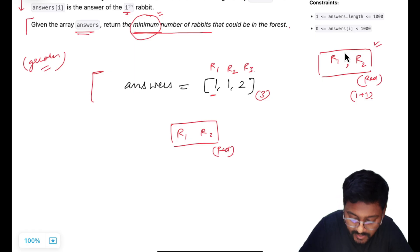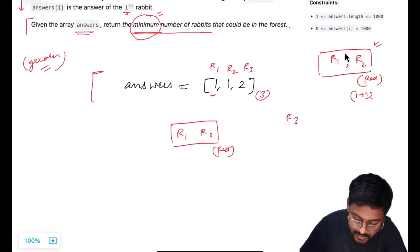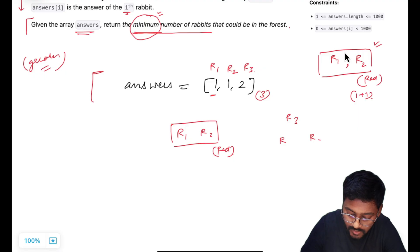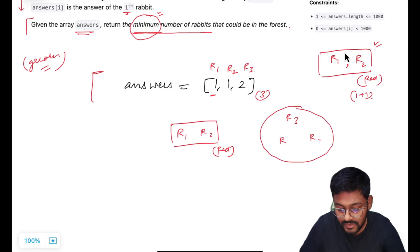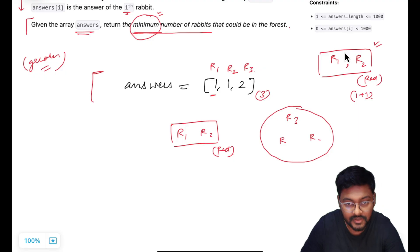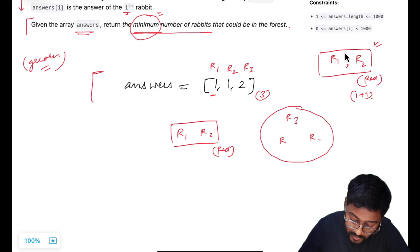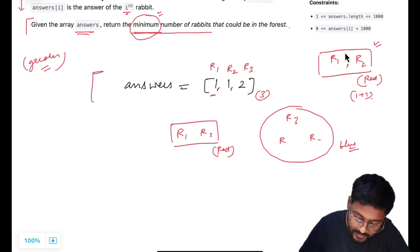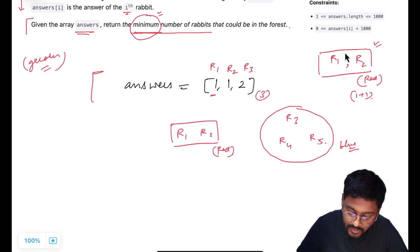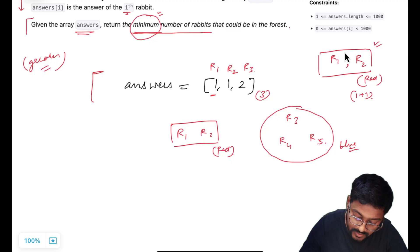Now there is a third rabbit and it is saying that apart from me there are two more rabbits with the same color. This shows that it is definitely from a different group — these three rabbits are with the same color — otherwise it would be from the previous group. So this group has blue color, and R3 has two more rabbits R4 and R5. These three rabbits are from a different group than the red one.